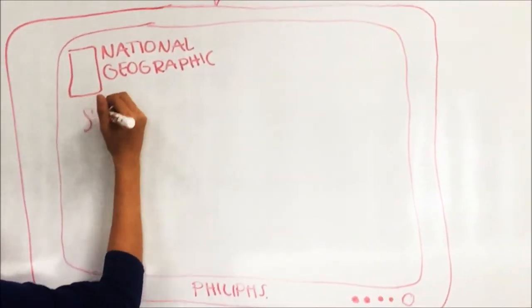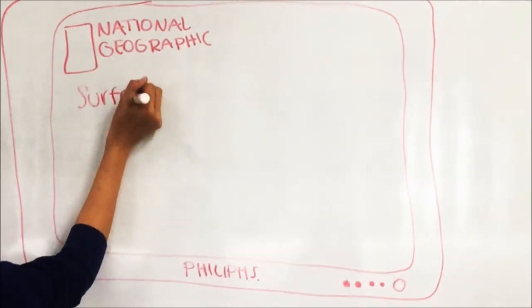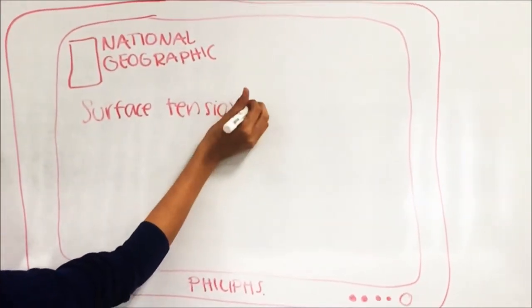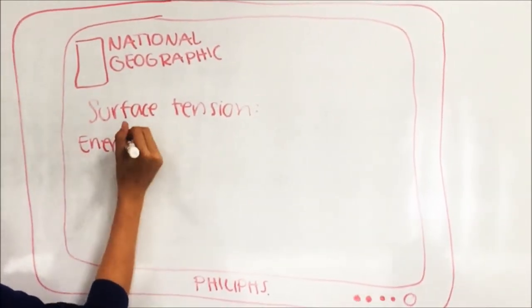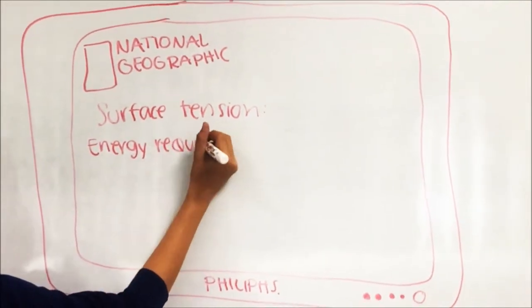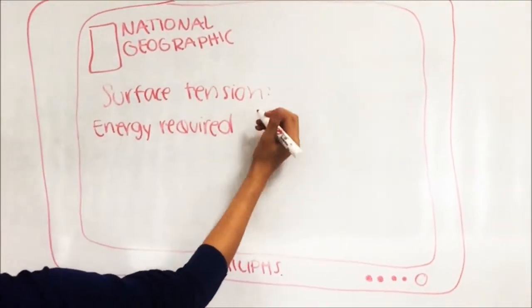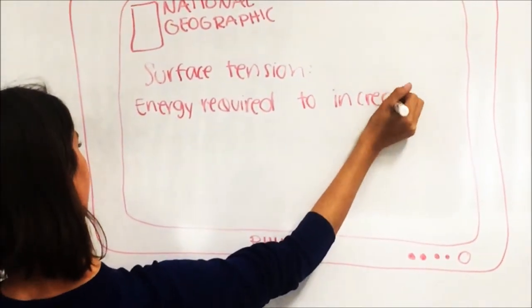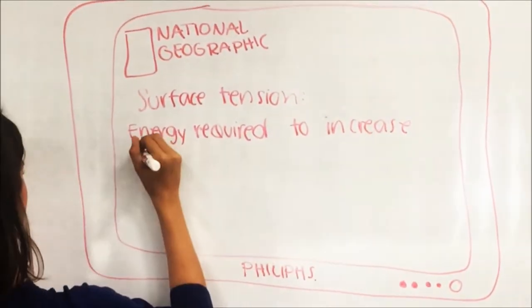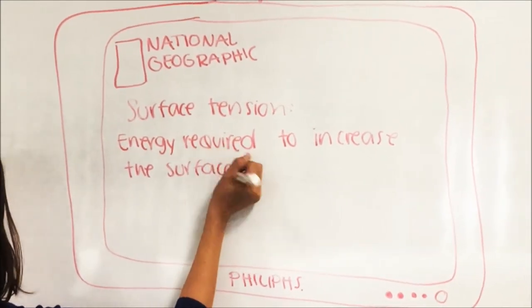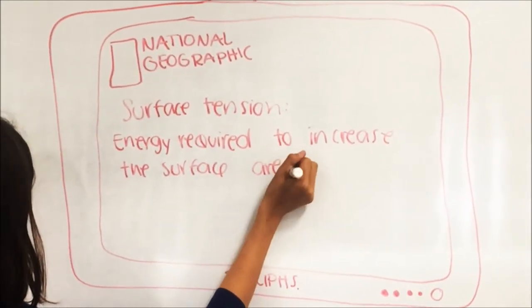Surface tension is a measure of the energy required to increase the surface area of a liquid by a unit of area.